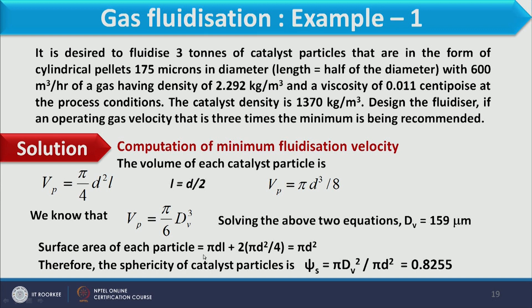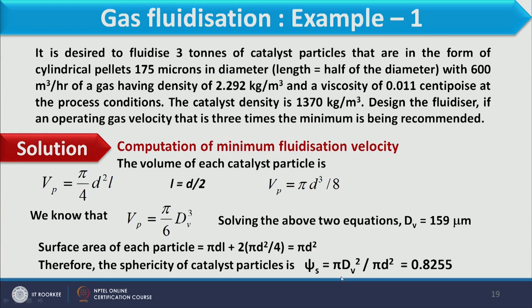The surface area of each cylindrical pellet is S = πdl + 2(πd²/4) = πd². Sphericity is defined as the surface area of a sphere having equal volume to the particle divided by the surface area of the particle: φ = πd_v² / (πd²). Calculating this gives a sphericity of 0.8255.